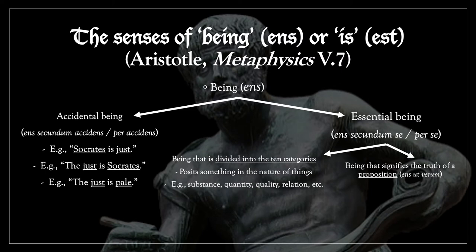Being that is divided into the ten categories posits something in the nature of things — that is, it signifies something positive and outside the mind. Being that is divided into the ten categories is thus the positive categories and what falls under them, namely substance, quantity, quality, relation, etc. All of the ten categories that Aristotle lists in The Categories and whatever falls within those categories is in this first kind of essential being.